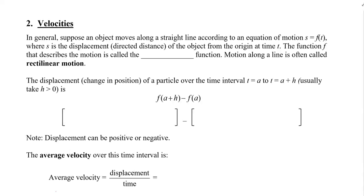In this video, you're going to learn how to find average velocity and instantaneous velocity. In general, suppose an object moves along a straight line according to an equation of motion, which we'll call S equals F of T, where S is the displacement — a directed distance, meaning it has a direction — of the object from the origin at time T. The function F that describes the motion is called the position function. Motion along a line is often called rectilinear motion.